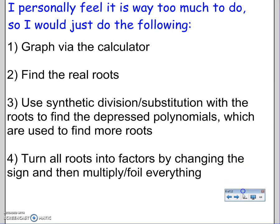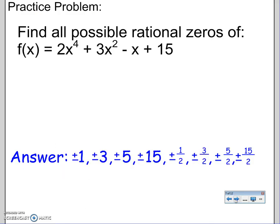So personally I feel that's way too much to do, so I would just do the following: 1) Graph via the calculator. 2) Find the real roots, it should be pretty obvious. 3) Use synthetic division or substitution with the roots to find the depressed polynomials, which are used to find more roots. 4) Turn all roots into factors by changing the sign and then multiply or FOIL everything.